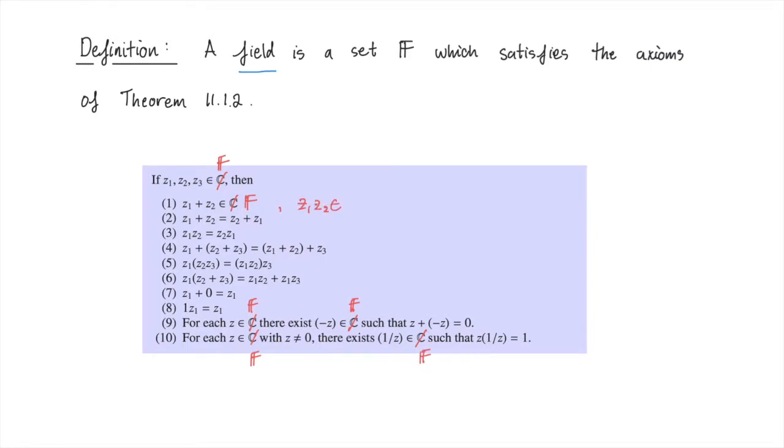The textbook is actually missing one axiom, and that's that the product of two complex numbers is still a complex number.